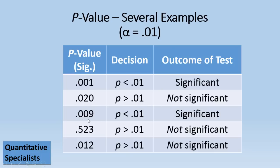.009, once again, quite close, but less than alpha .01, so it's significant. .523 is greater than .01, so it's not significant.